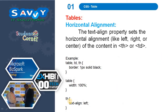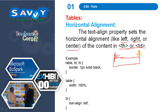Next, horizontal alignment. The text-align property sets the horizontal alignment — left, right, or center — of the content in th or td. For example, in a cell, text starting on the left side is left alignment, text ending at the extreme right is right alignment, and text in between is center alignment. Here we are applying text-align left.